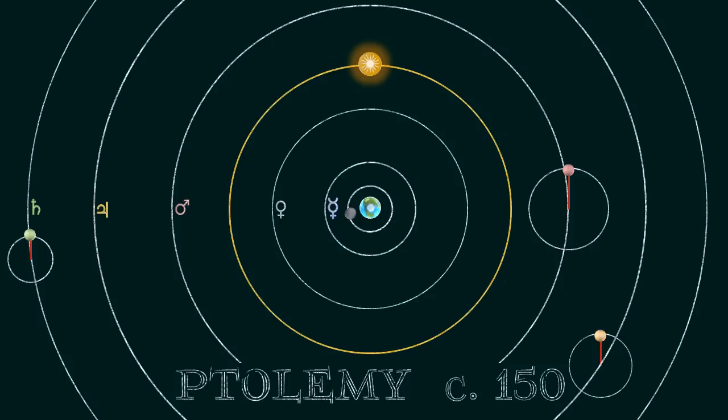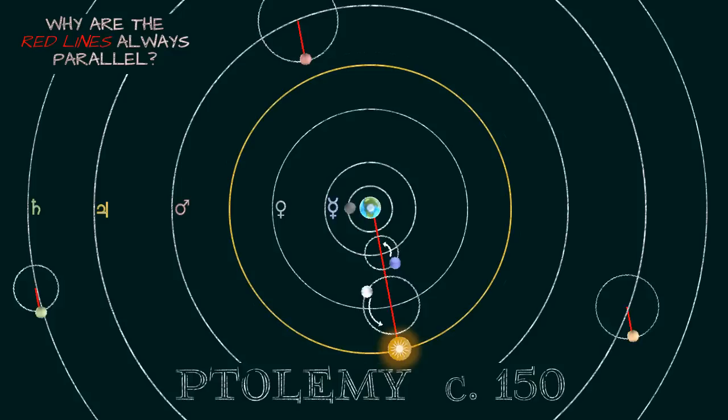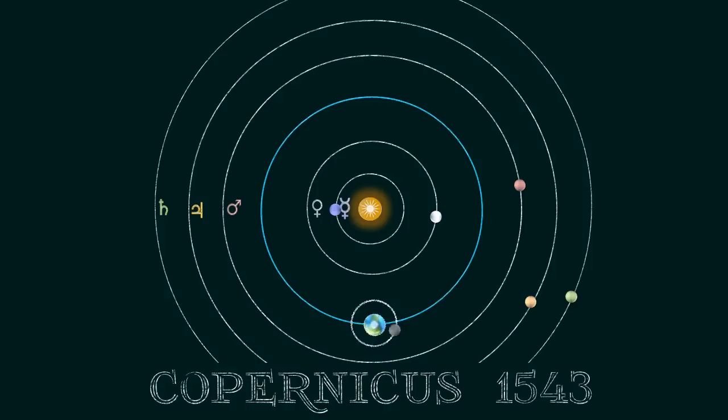For the model to work, the Sun had to play a special role. Its position relative to the Earth was mysteriously linked to the motion of each planet on its epicycle. It took centuries before we realized that this aspect of the Earth-centered model pointed to the fact that the Sun, not the Earth,